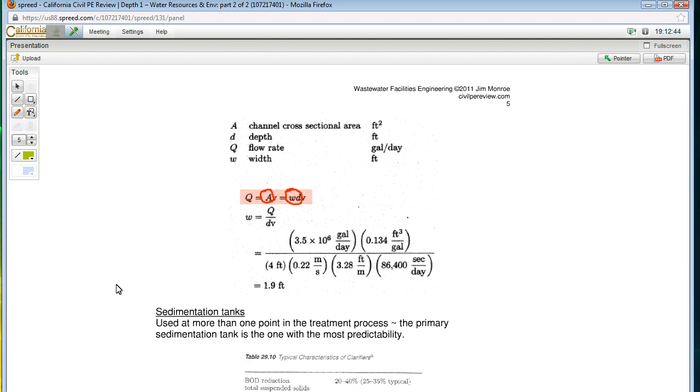You're after the width, so you isolate it. Lo and behold, you have the given flow rate, the depth they gave you, and you computed the velocity using the camp constant. You plug all that stuff in, and you come up with a value of 1.9 feet.